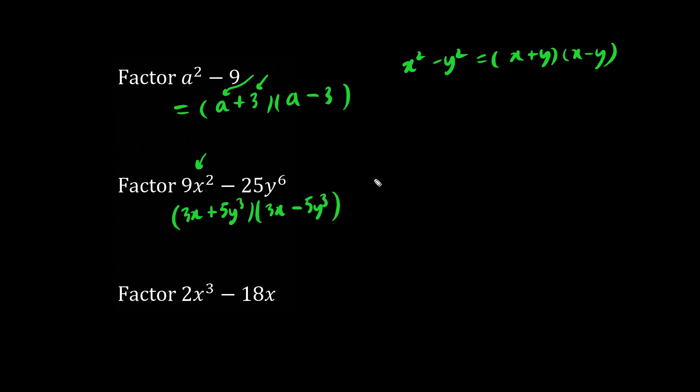So it happens that a equals 3x and b equals 5y cubed. This question essentially is asking factor a squared minus b squared.